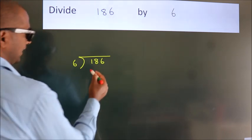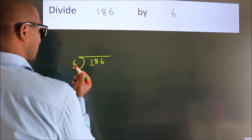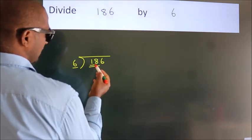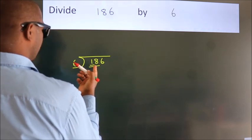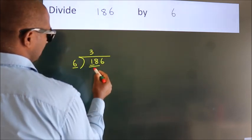Next. Here we have 1, here 6. 1 smaller than 6. So we should take 2 numbers, 18. When do we get 18? In 6 table. 6 threes, 18.